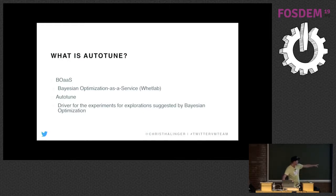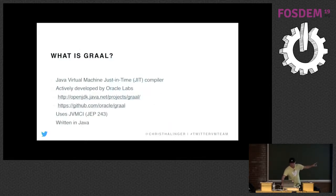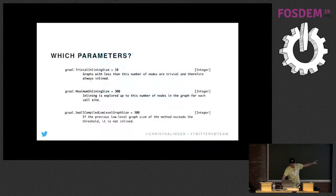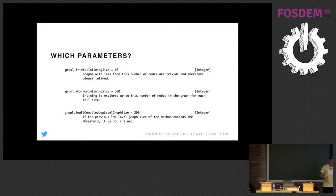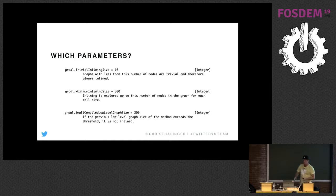Autotune is the driver to run these experiments. The parameters being tuned include: trivial inlining size — by default it's 10, so if a compiler graph of an inlinee is smaller than 10 nodes it just inlines it without looking at other data. Then there's maximum inline size — if it's bigger than 300 it doesn't inline it. And there's small compiler low-level graph size, similar to the second one. These three parameters affect inlining the most.